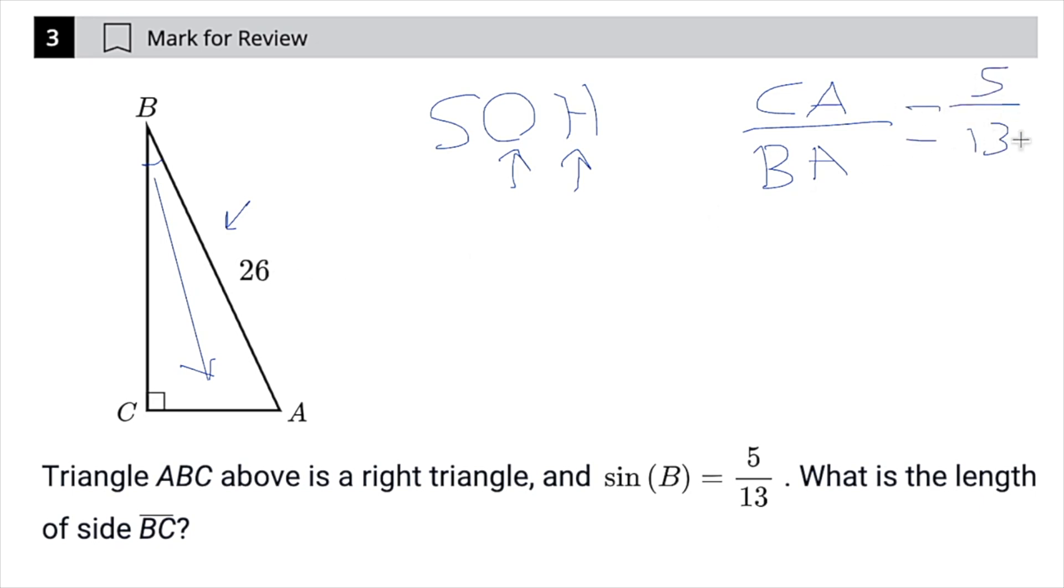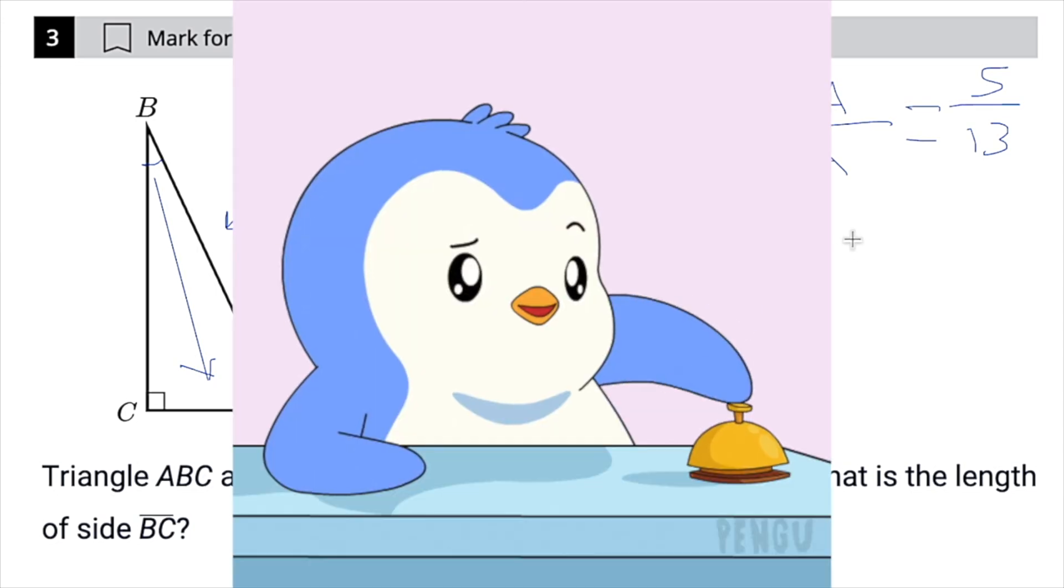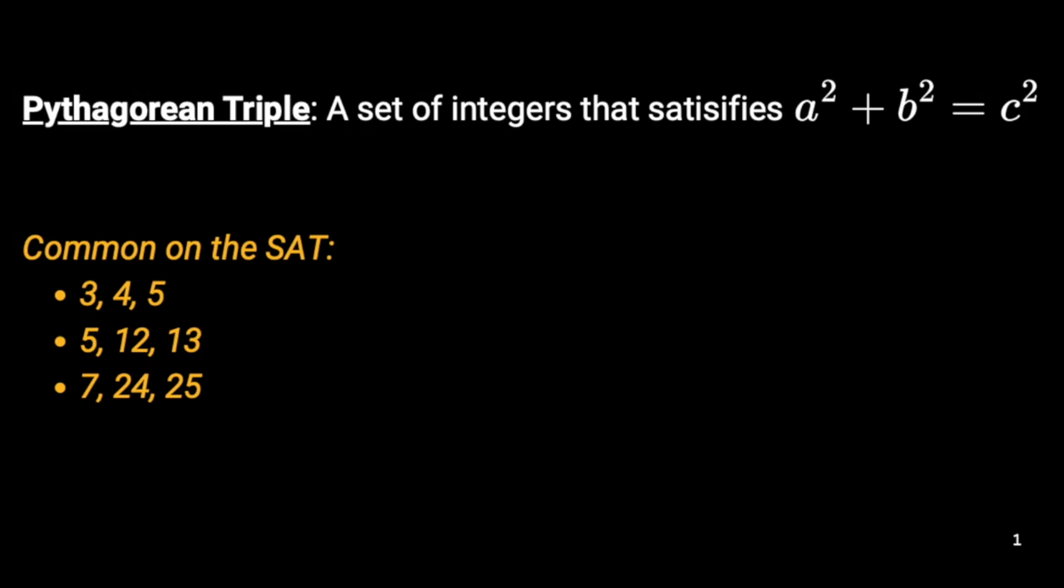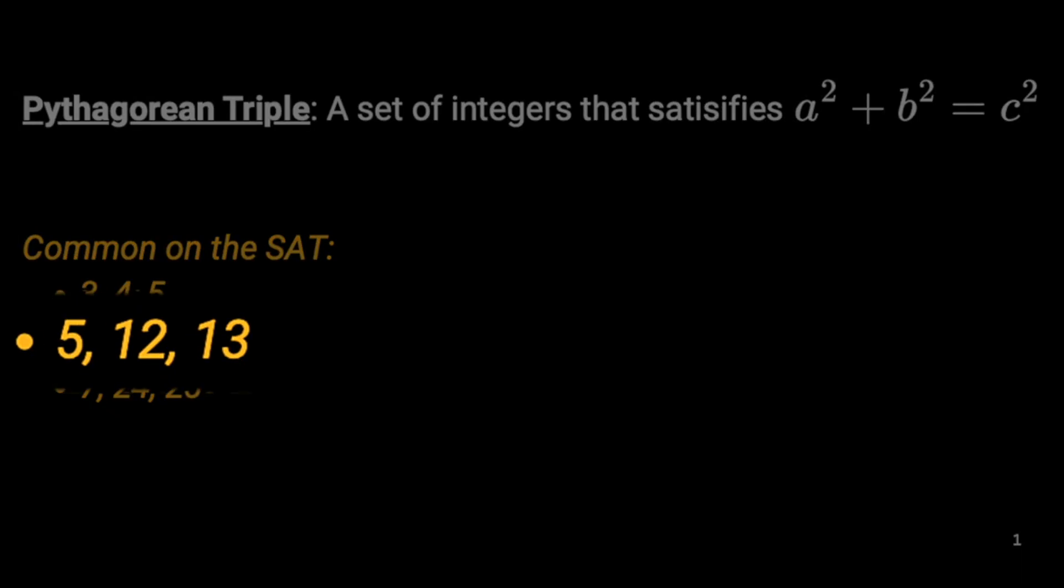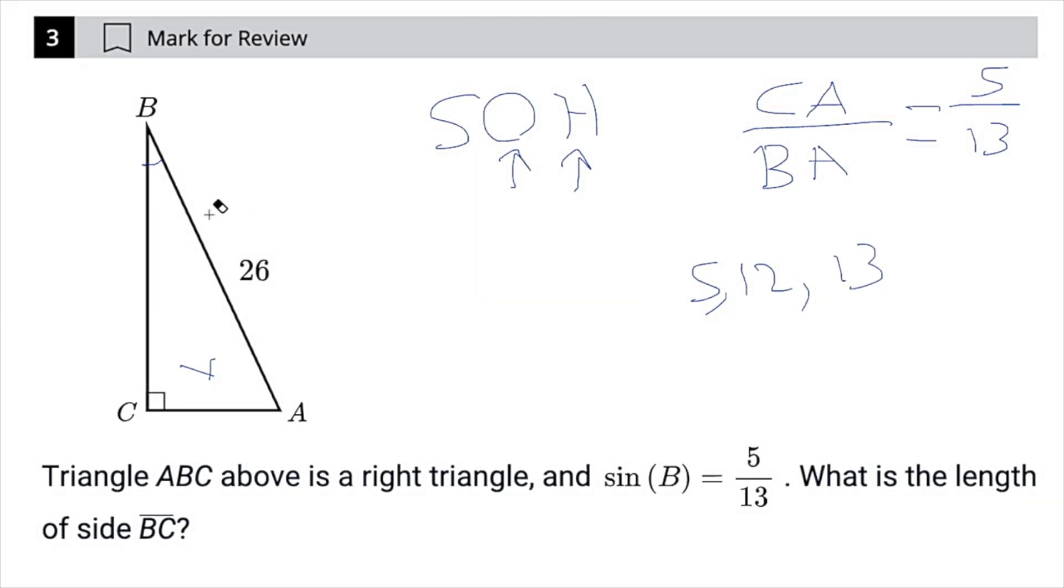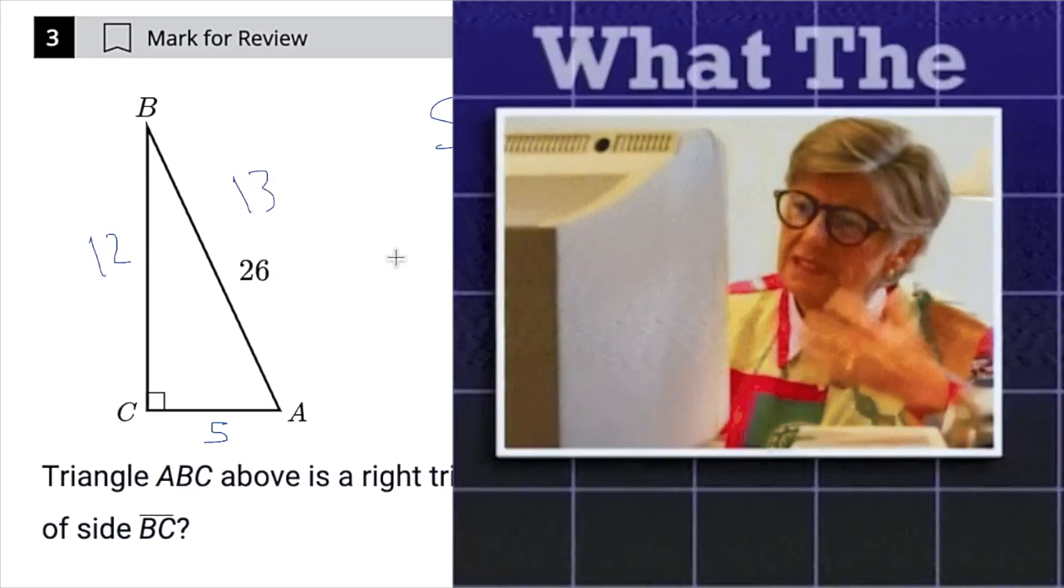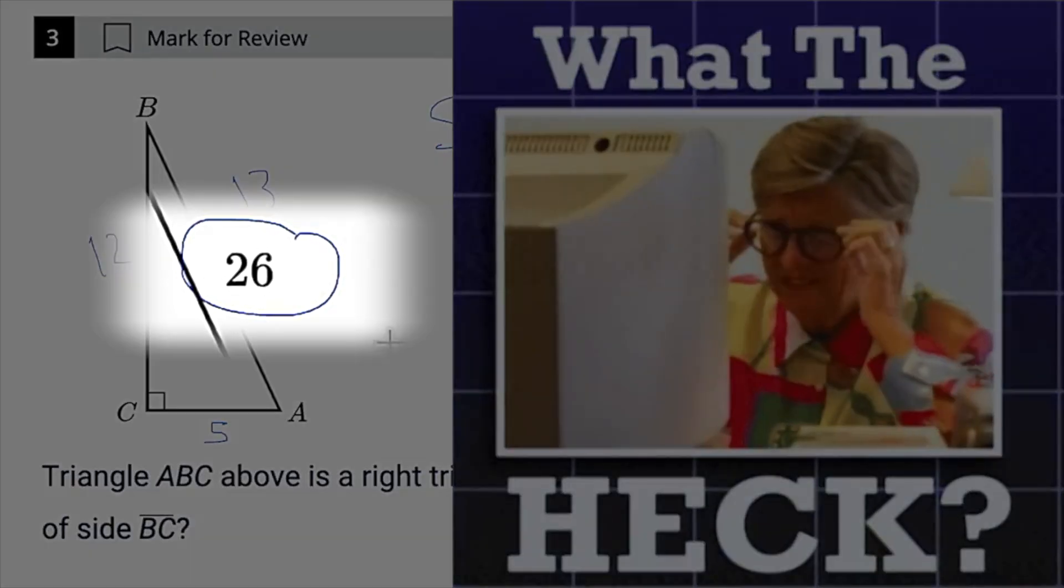And if you see the number 5 and 13, that should ring a bell that this is a Pythagorean triple, a 5, 12, 13 triangle. So basically, if we wanted to, we could just kind of label this triangle all around as 5, 12, and 13. And then you're thinking, what the heck, dude? It's 26. Well, yeah, it's because this is our ratio.